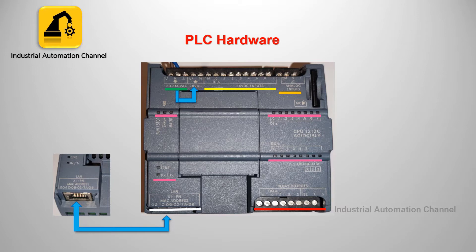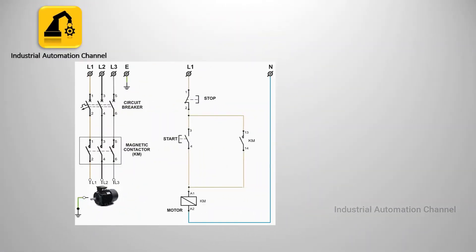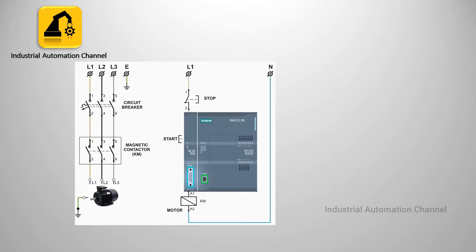Let's start our first program in TIA Portal. Suppose that we have a motor and two push-buttons for start and stop. If you press start, the signal will pass to the output and the motor will turn on. If you release start, it will be latched and the motor remains on. It will stop when you press the stop push-button. We can do this process with PLC and TIA Portal.